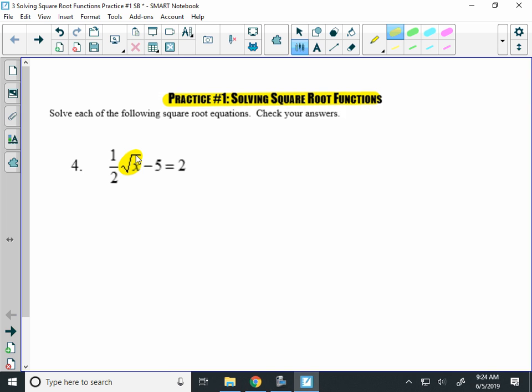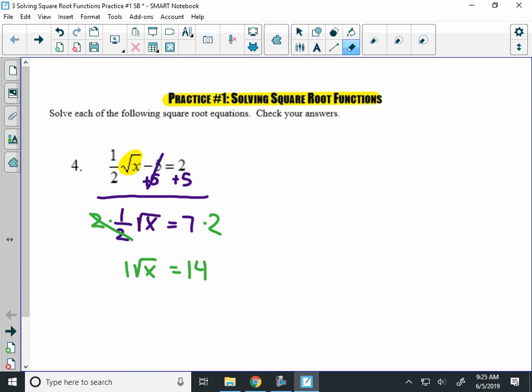Here that means I have to add the 5 to both sides to start. So I'm going to add 5, and I'll have 1 half square root of x equals 7. Now, 1 half square root of x, I can eliminate the denominator of 2 by multiplying both sides by 2. I will have 1 square root of x equals 14, but I don't really need to worry about that 1 out in front. It doesn't change anything, so I can kind of erase it.